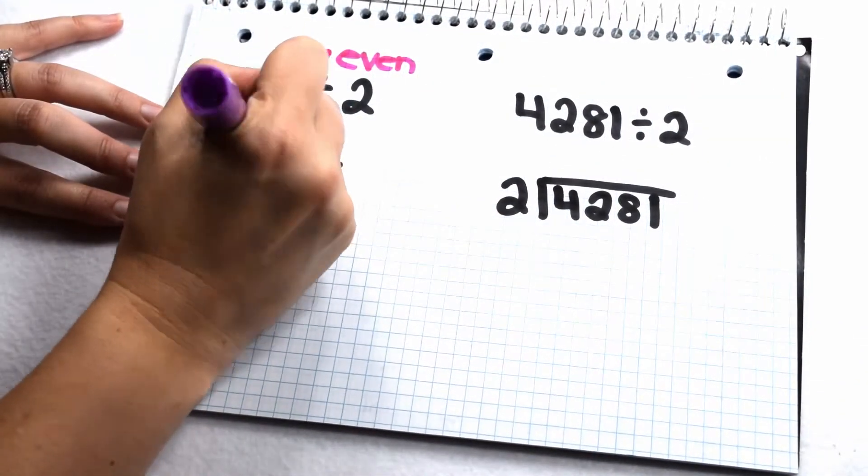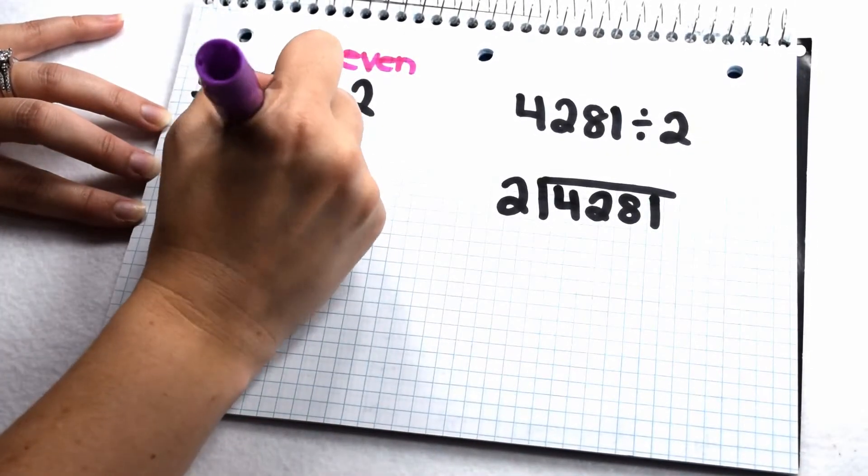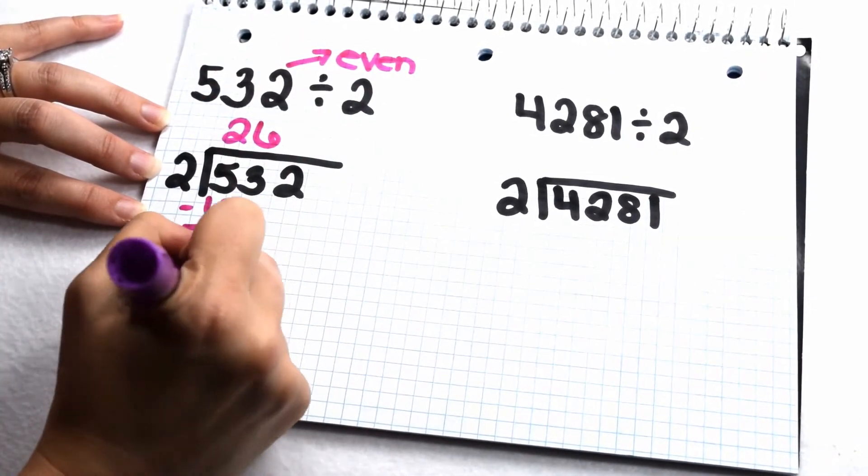When we go to try, we see 2 goes into 5 two times, subtract my 4, that leaves me with 1. Bring down my 3. 2 goes into 13 six times, subtract my 12.